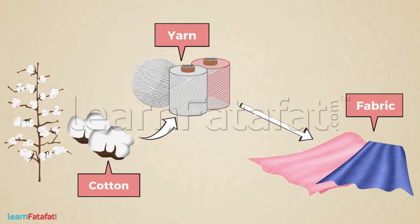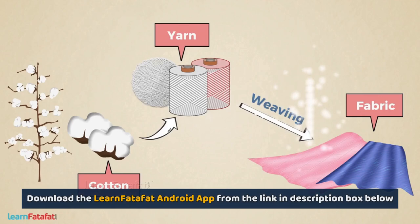After making yarn from cotton, it is then processed to make fabric. There are a variety of methods for making fabric from yarn. In this lesson, we will learn about weaving. Let's understand it with an activity.